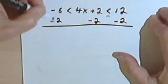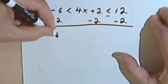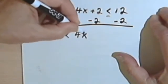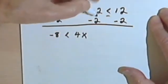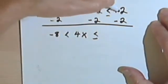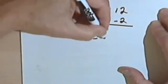So now I've got negative 6 minus 2 is negative 8. I've got my less than sign. I've got a 4x, that's all I have in between the signs. I've got a less than or equal to sign, and I've got 12 minus 2 is 10.